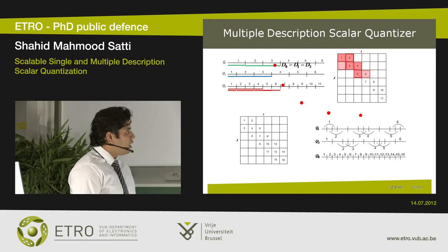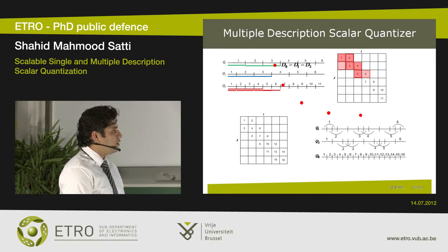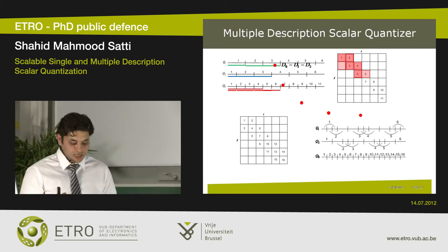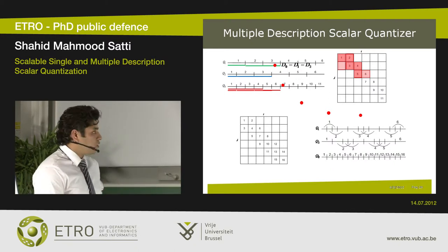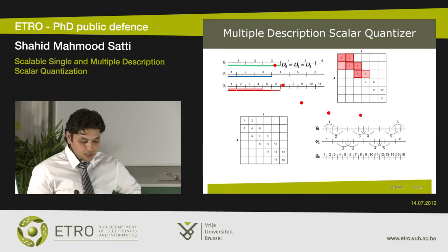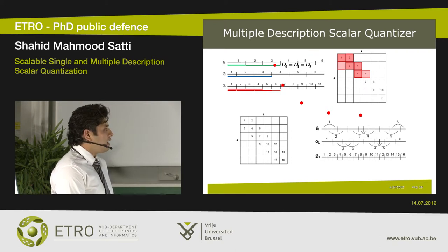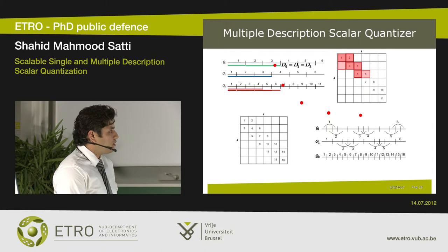So the distortion is reduced. However, we see that Q1 and Q2 here and Q1 and Q2 there have the same number of cells — six in every case. So the total rate, which is the sum of the rates from two side descriptions, is exactly the same in both cases. But we have a finer central reconstruction. This fine reconstruction is not free of cost — it comes at the cost of increasing the side distortion. Q1 and Q2 in the second case have higher distortion because, although you have the same number of cells, they are now disjoint cells.